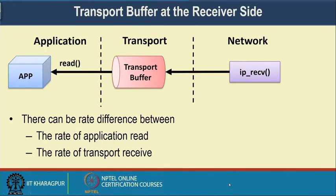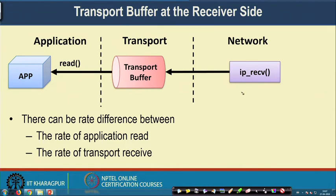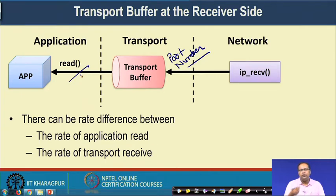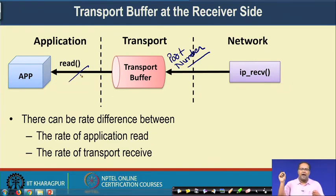Looking at this diagram: the IP receive is a hypothetical function that receives data from the IP layer and puts it into the queue. This queue is the transport layer buffer corresponding to an application, and we use the port number to identify which buffer to put the data in. Once the network layer puts data at the transport layer, the application uses the read system call to receive the data from the transport layer.